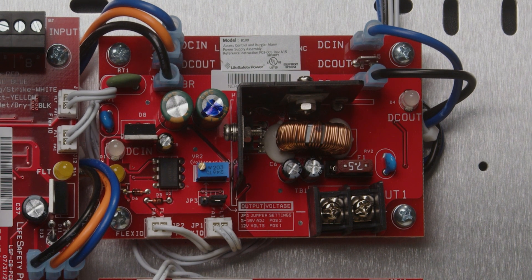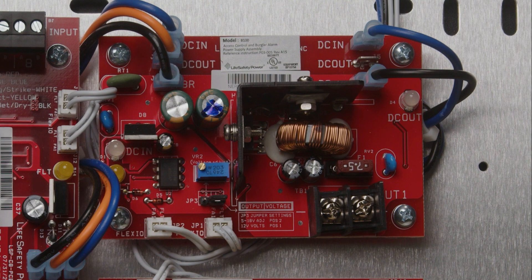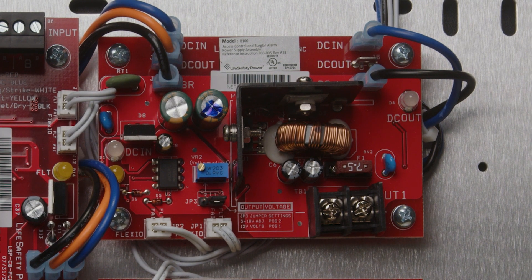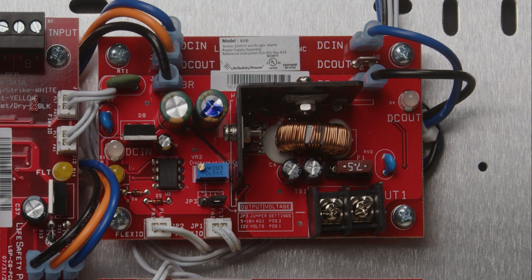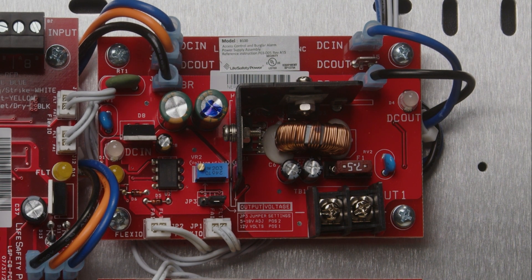You can get the jumper to position 2 on JP3 and use the BR2 voltage adjust. You can change the output value from 3 to 18 volts DC to help overcome that voltage drop in a larger run.